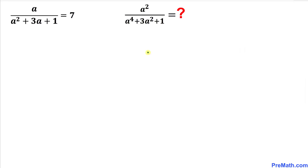Welcome to pre-math. In this video we have got this rational equation: a divided by a squared plus 3a plus 1 equals 7, and now we are going to find the value of a squared divided by a to the power 4 plus 3a squared plus 1.